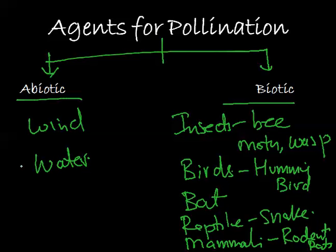So this is where we discussed different types of pollination and the agents involved in transferring pollen from one flower to another, with some simple examples to remember. In the next session, we will discuss more about pollination, different modes, and different types of adaptations so that pollen is transferred to another flower. Thank you.